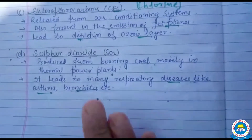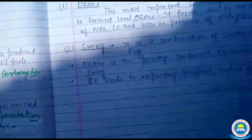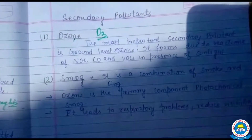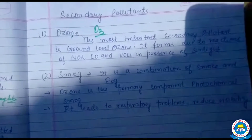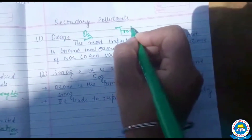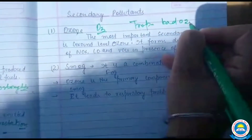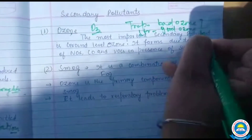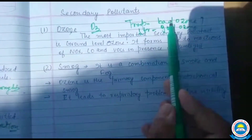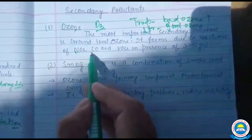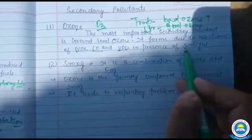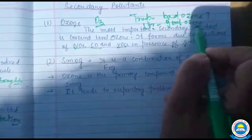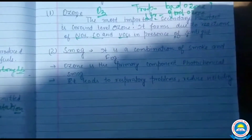Secondary pollutants में सबसे पहले ozone (O₃) — three molecules of oxygen। जब ozone atmosphere के troposphere part में present होती है वो bad ozone होती है, और stratosphere में होगी तो good ozone होती है। Troposphere वाली ozone बनती है by the reactions of NOx, carbon monoxide, and volatile compounds in presence of sunlight, इसलिए यह act करती है as a pollutant।